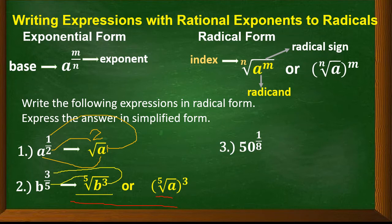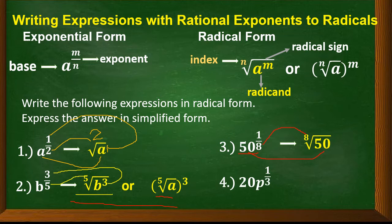Another example: 50 to the power of one eighth. So 8 is the index and 50 is the radicand. Since the exponent is only 1, there is no need to write 1 as the exponent of 50.